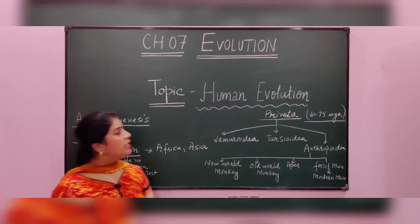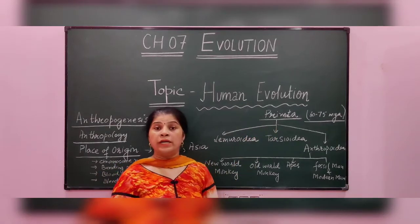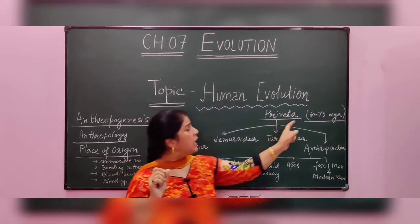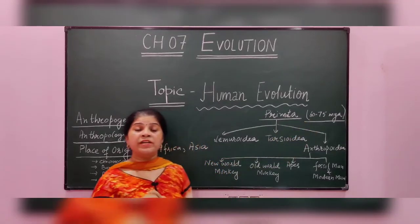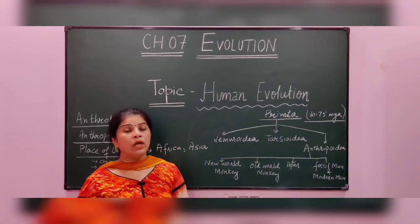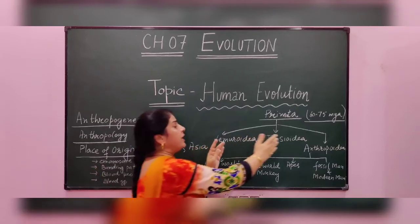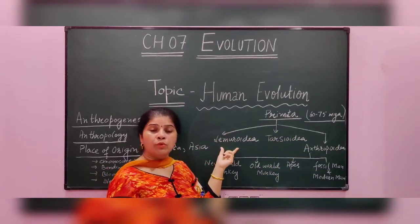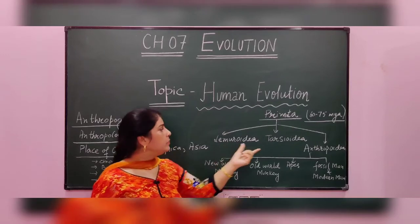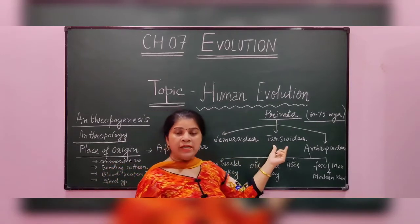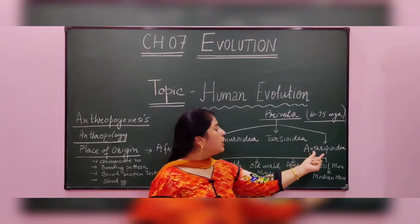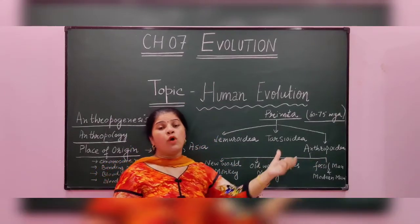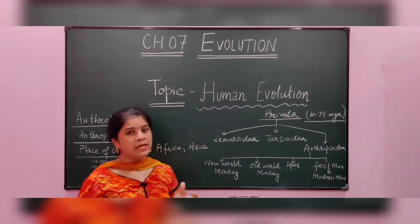We human beings belong to order Primata. Order Primata originated about 60 to 75 million years ago and is divided into three families: Lemuroides, Tarsioides — which includes tarsiers — and Anthropoides, which includes monkeys, apes, and man.